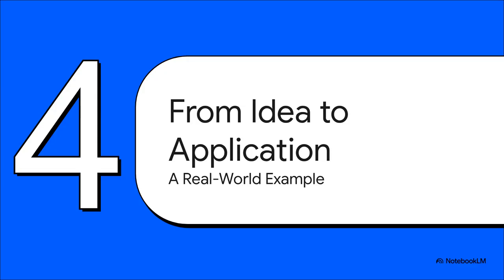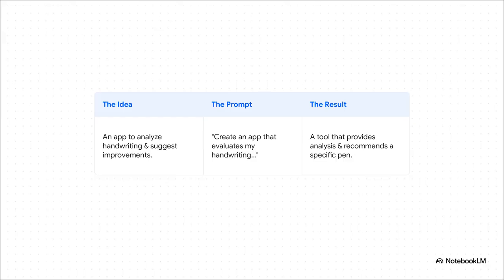Talking about it is one thing, but seeing it in action is what makes it all click. So let's look at a real-world example from the source material. Someone had an idea — they wanted an app that could analyze handwriting. They typed out a single sentence prompt, and the result was a legit, fully functional tool. You could upload a picture of your handwriting and it would spit out a whole analysis. It even recommended what kind of pen to buy — a perfect little tool for an e-commerce store or for affiliate marketing.